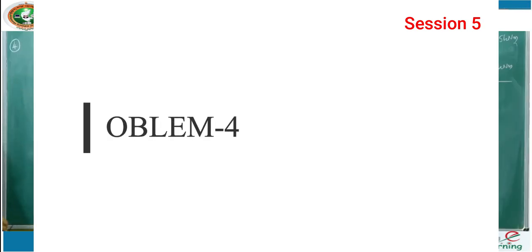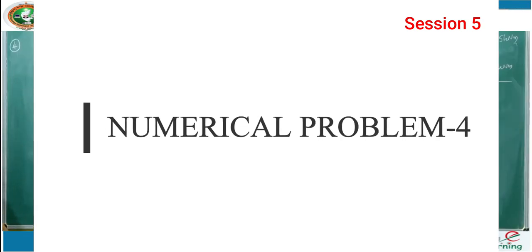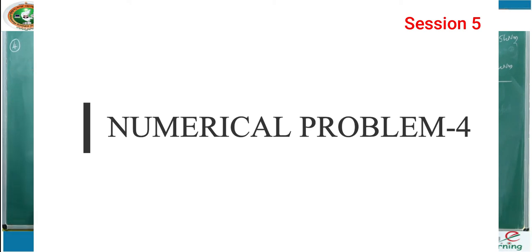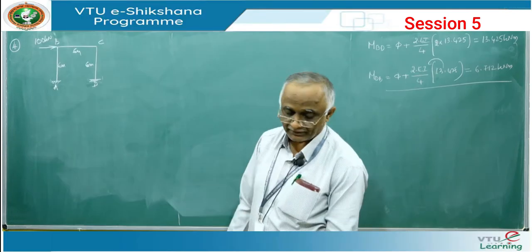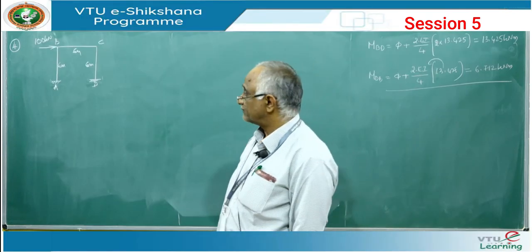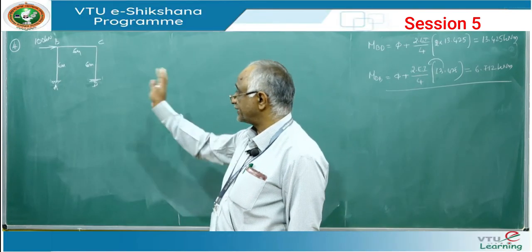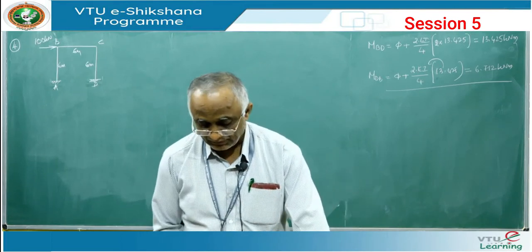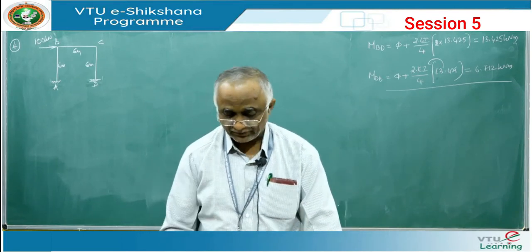Let us take a simple portal frame ABCD with all spans of 6 meters each — columns as well as beams — subjected to a horizontal load at B acting from left to right. This is a sway case. No load is applied on the members, just to see how it works using the stiffness approach.